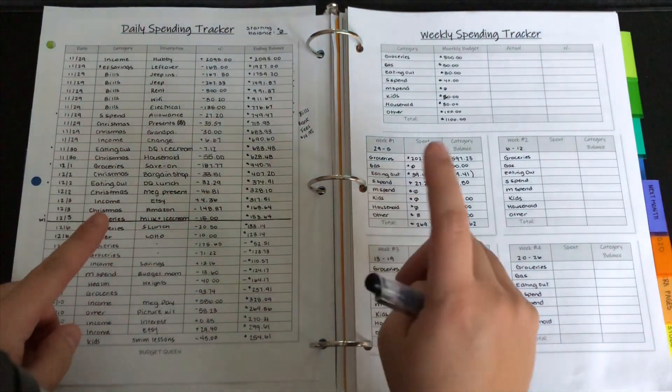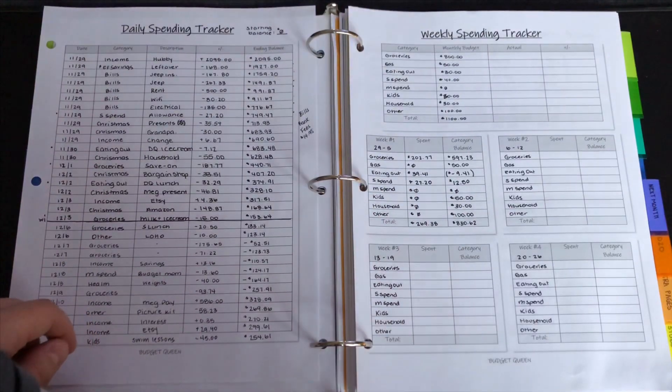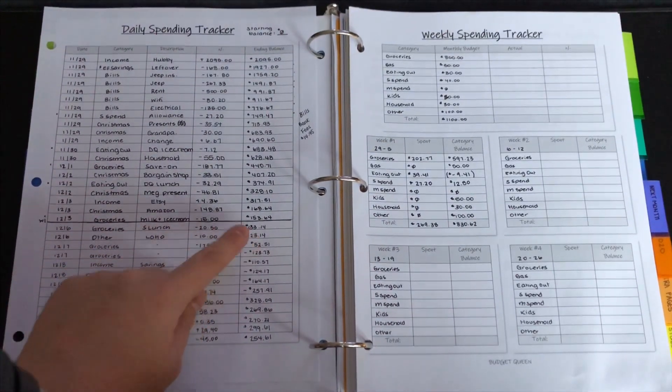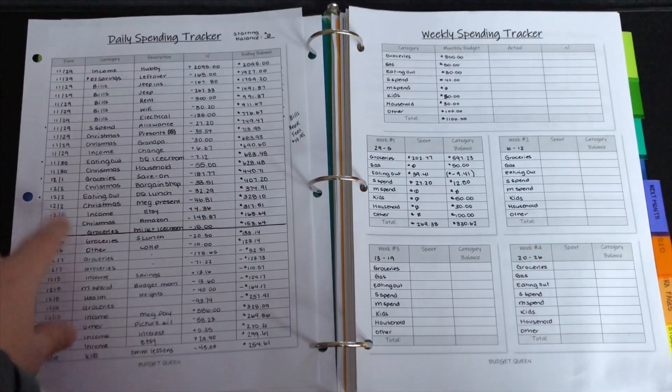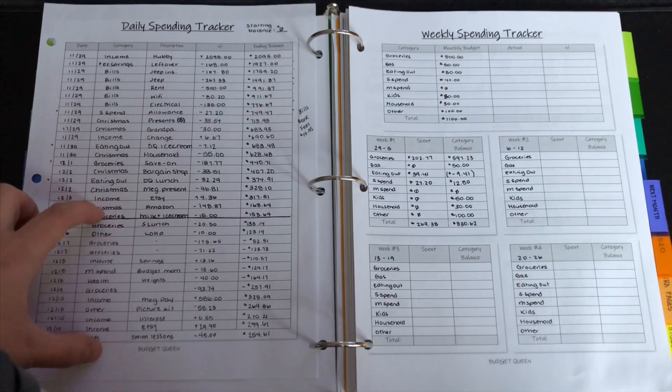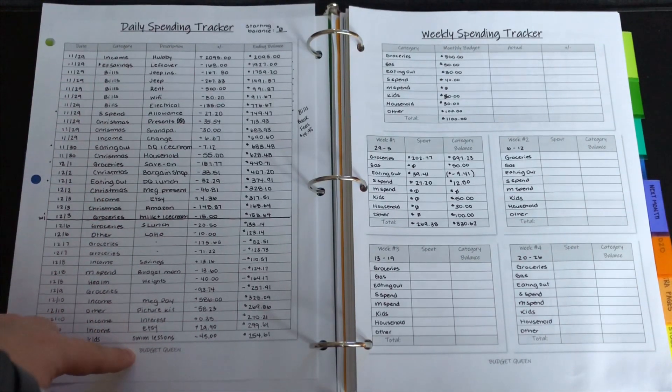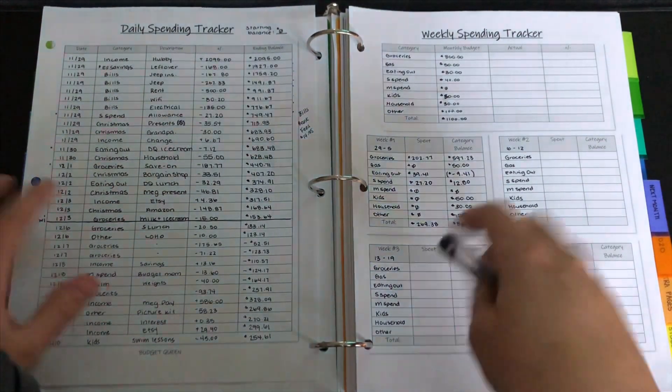But today we are going to do week two of my weekly spending tracker for December. I drew a line here on my daily spending tracker so you could kind of see the cutoff between weeks. So we're going to focus on the bottom chunk here of my budget sheet as well as these budget sheets are from my Etsy shop. It's called Budget Queen Shop. So go check it out if you're interested.